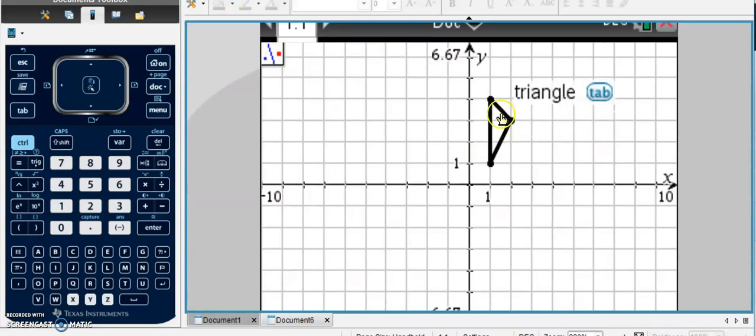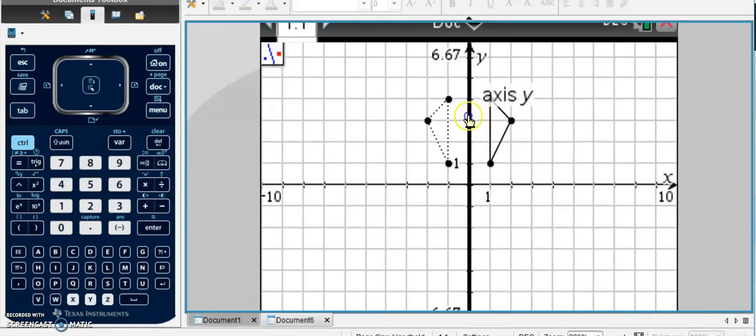So if I want to reflect this triangle over the Y-axis, I would click the triangle, and then I would click the Y-axis,